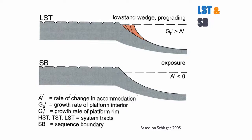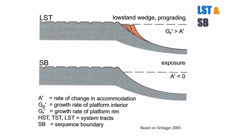During the lowstand system tract, the preceding surface is exposed and can be karstified. Production of the platform is now limited to a rim — almost only reef with very little other sediment being formed, creating a very narrow carbonate system living right on the edge of the platform. Because accommodation is low, you typically have progradation since the rate of production of the rim exceeds accommodation creation. You also have a sequence boundary and subaerial exposure at the top.